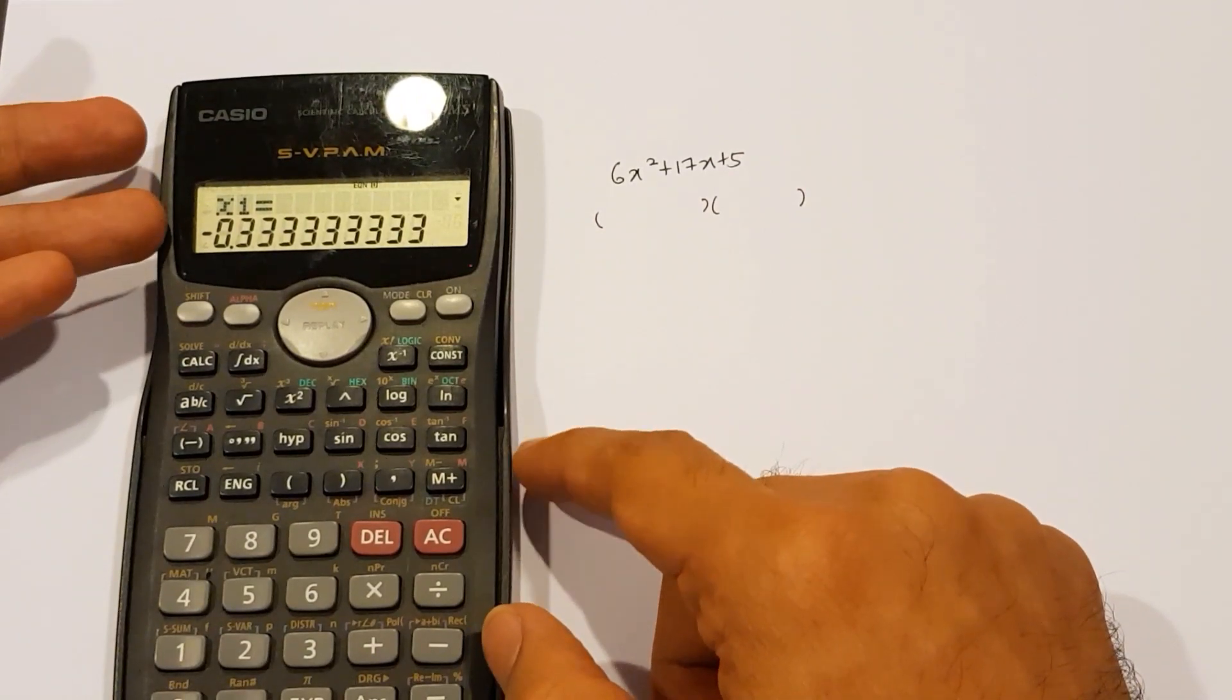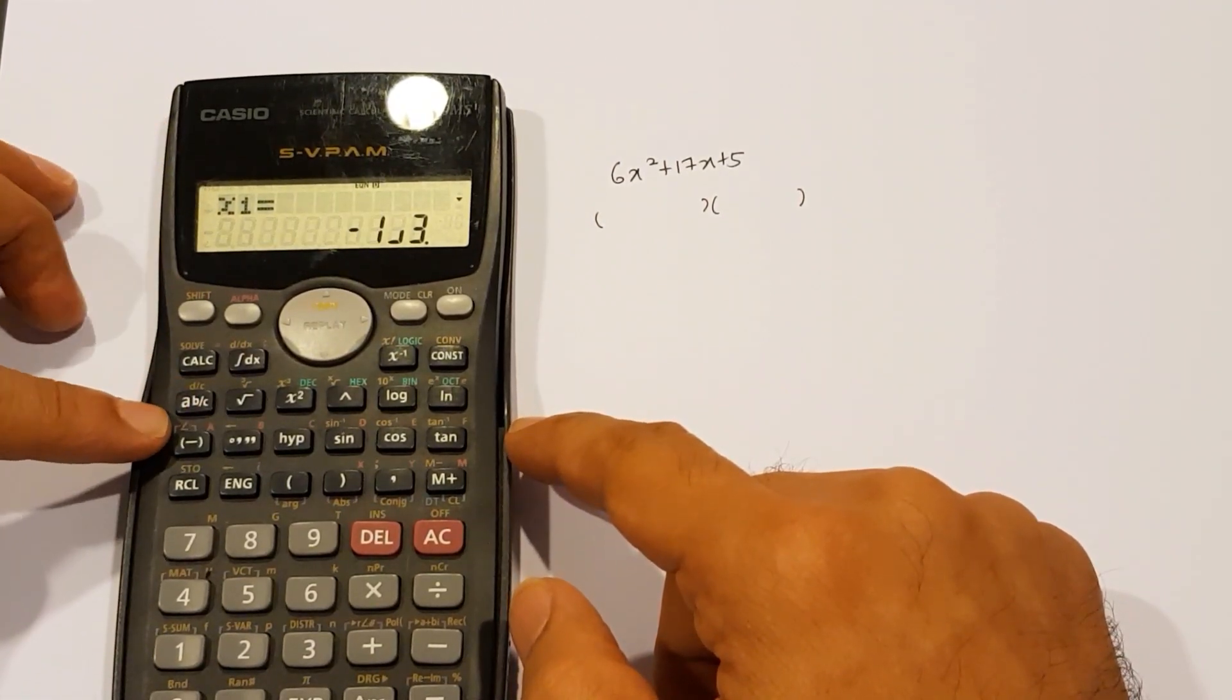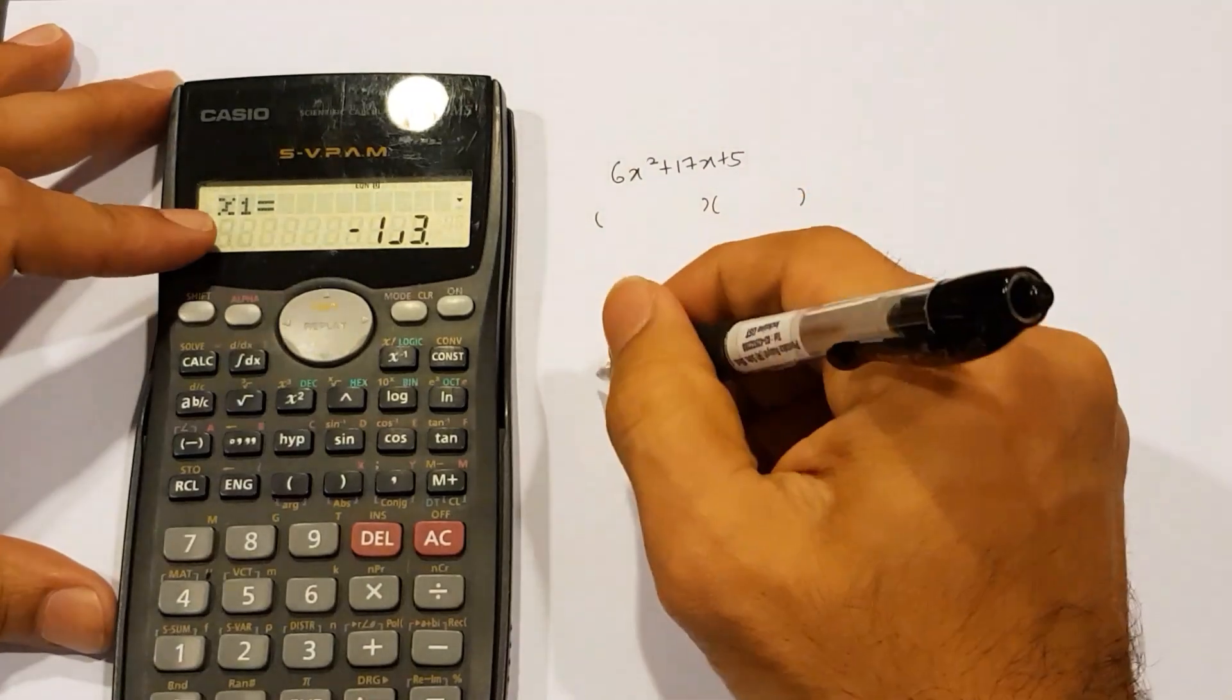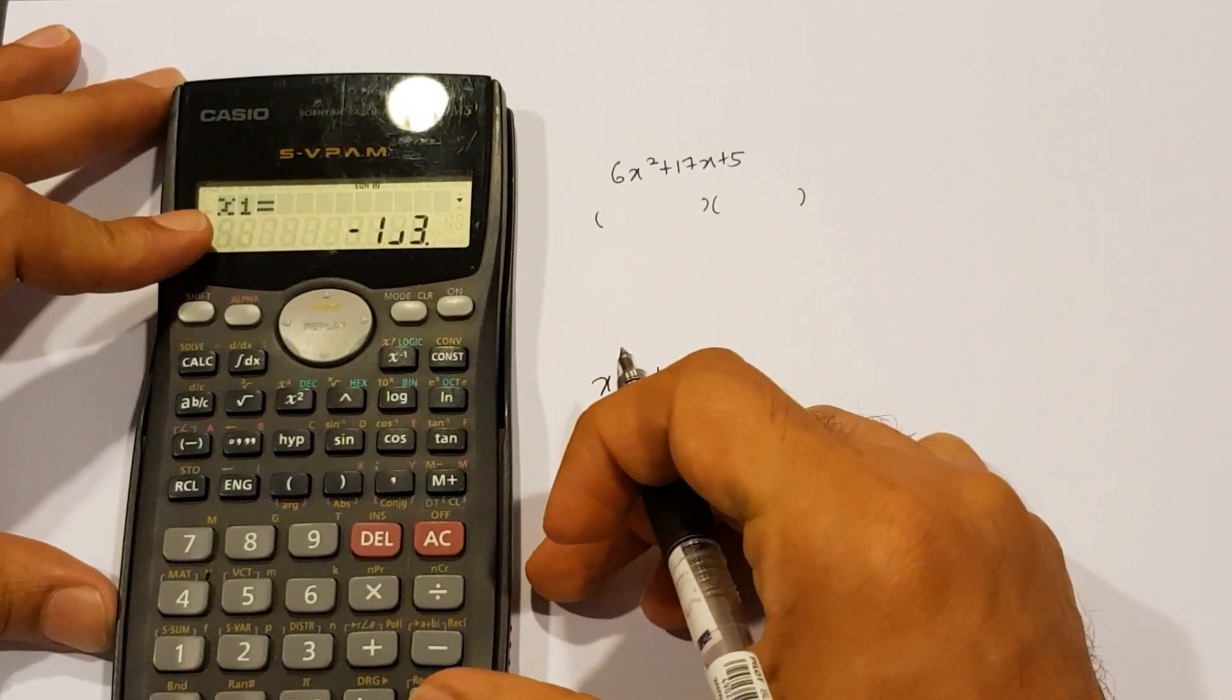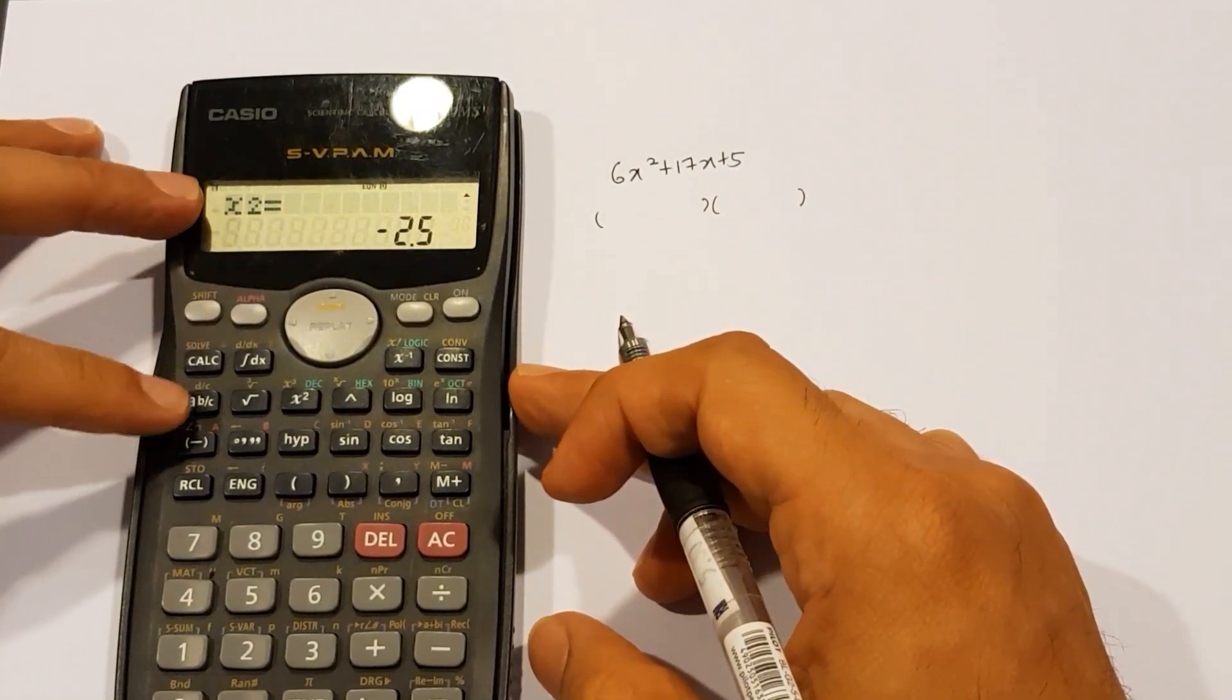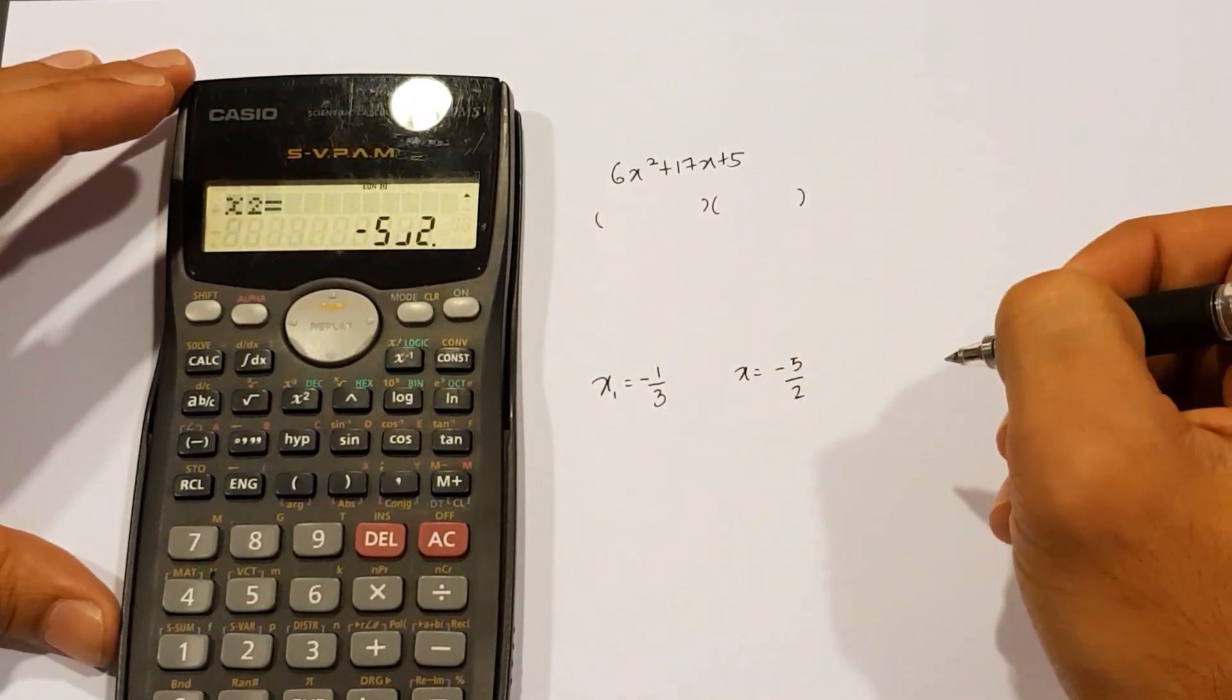It seems a bit odd because you've got a long recurring decimal, but it's okay. I just tap shift ABC, that button right here. Notice how it changes to negative 1 over 3. So it's a fraction. I'm going to write x1 equal to negative 1 over 3, and I hit equal again, and I get negative 2.5. Once again, I'm going to tap shift and ABC. Notice I get an improper fraction. x2 equal to negative 5 over 2.